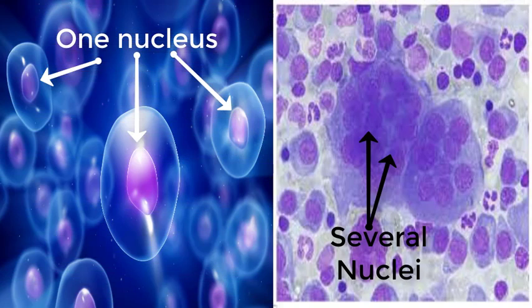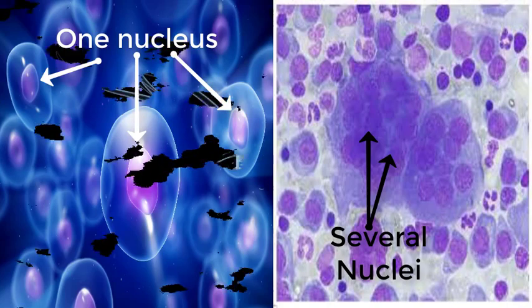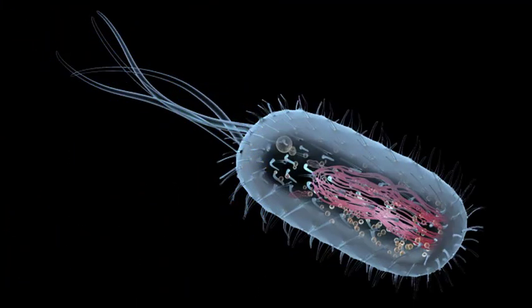A eukaryote can consist of a single nucleus or can have several nuclei. As said earlier, many cells can combine to form a tissue, and this is only possible in the case of eukaryotes. Prokaryotic cells always exist by themselves.